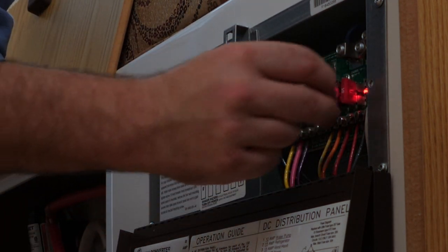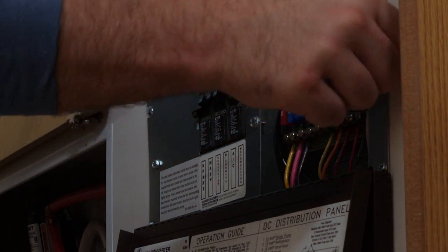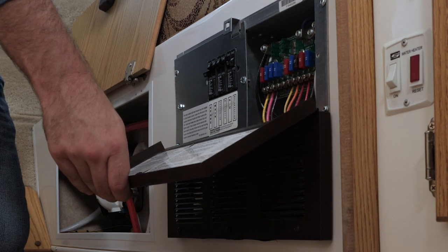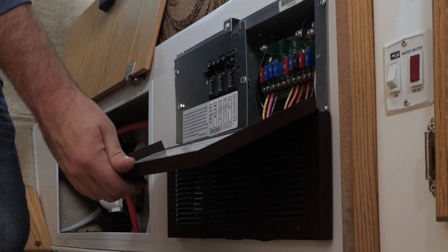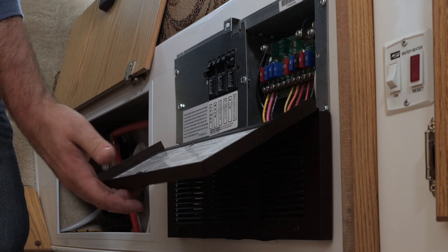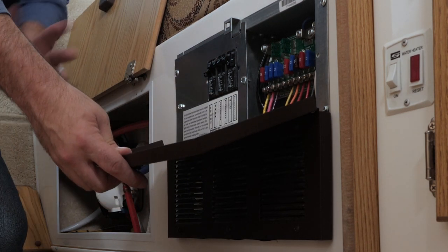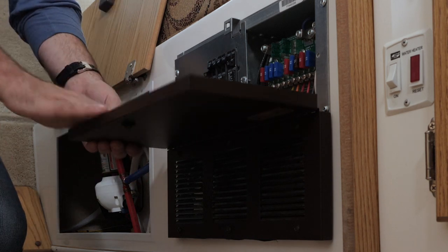That way you'll know that the fuse needs to be replaced. That's the converter/charger—it's a 55 amp converter made by a company called Parallax. As far as maintenance goes, there's not a whole lot for you to do in here. But if something's not working correctly, just go ahead and check here first.